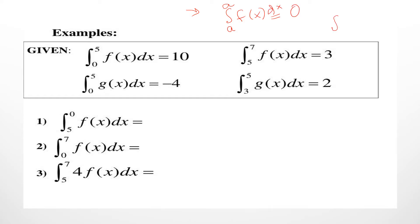Similarly, if from a to b, f(x) dx is written, and if you just change the positions of the upper and lower limits, everything stays the same except you change the sign — and they will be equal.